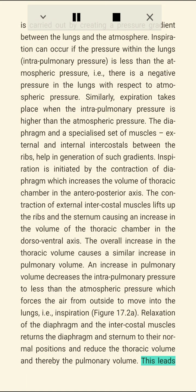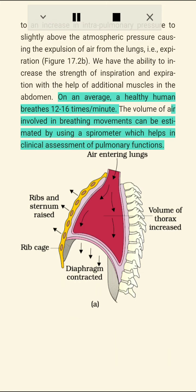Relaxation of the diaphragm and intercostal muscles returns them to their normal positions, reducing thoracic volume and thereby pulmonary volume. This leads to an increase in intrapulmonary pressure to slightly above atmospheric pressure, causing expulsion of air from the lungs — i.e., expiration. We also have the ability to increase the strength of inspiration and expiration with the help of additional muscles in the abdomen.